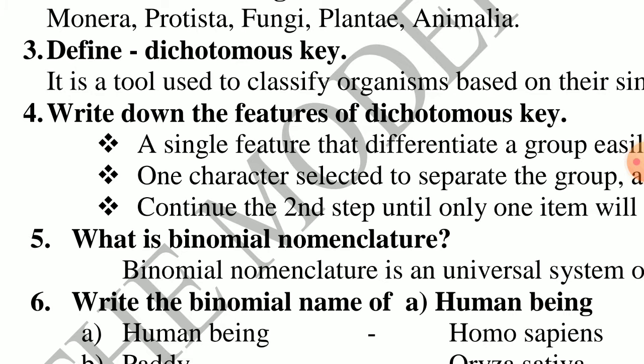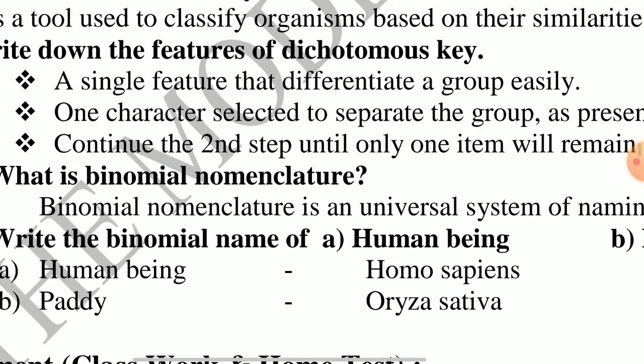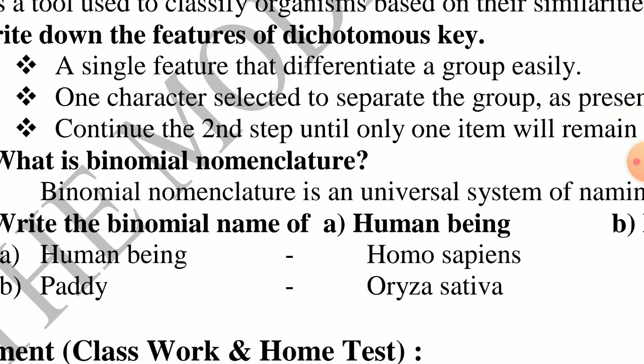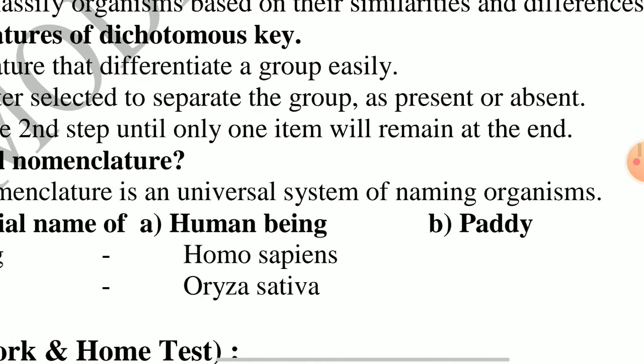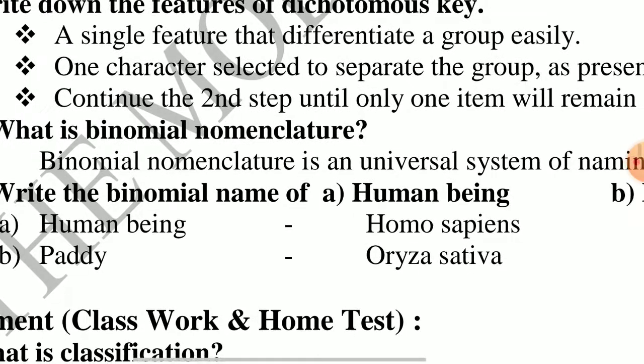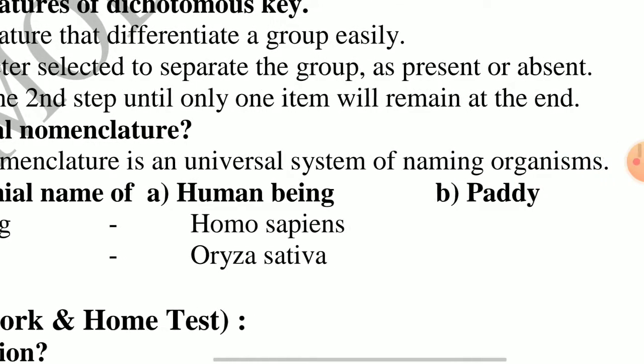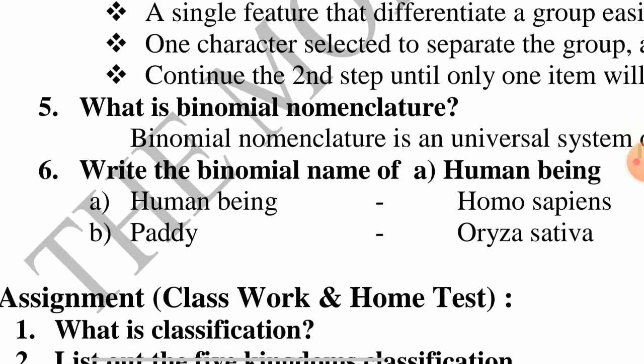Fourth question: write down the features of dichotomous key. A single feature differentiates a group easily — only one difference can group organisms easily. One character is selected to separate the group as present or absent, for example whether an organism has a backbone or not. Continue each step until only one item remains at the end.